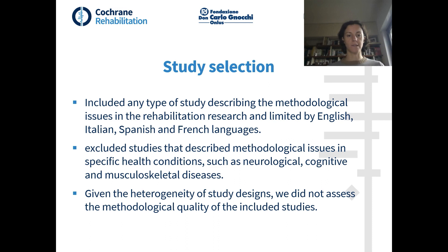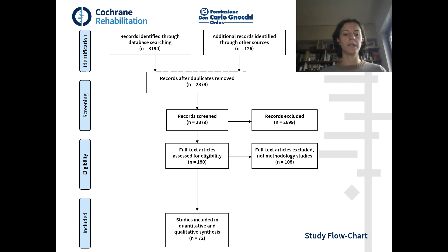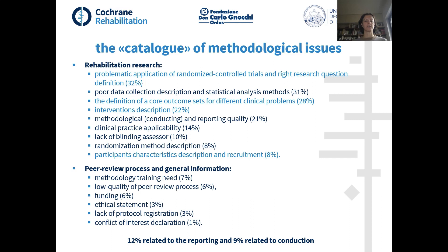After the screening work, we included 72 studies, and from the analysis of these studies we identified a catalogue of methodological issues. We divided this catalogue into two parts: the issues more related to rehabilitation research, and the issues more related to the peer review process and general information.